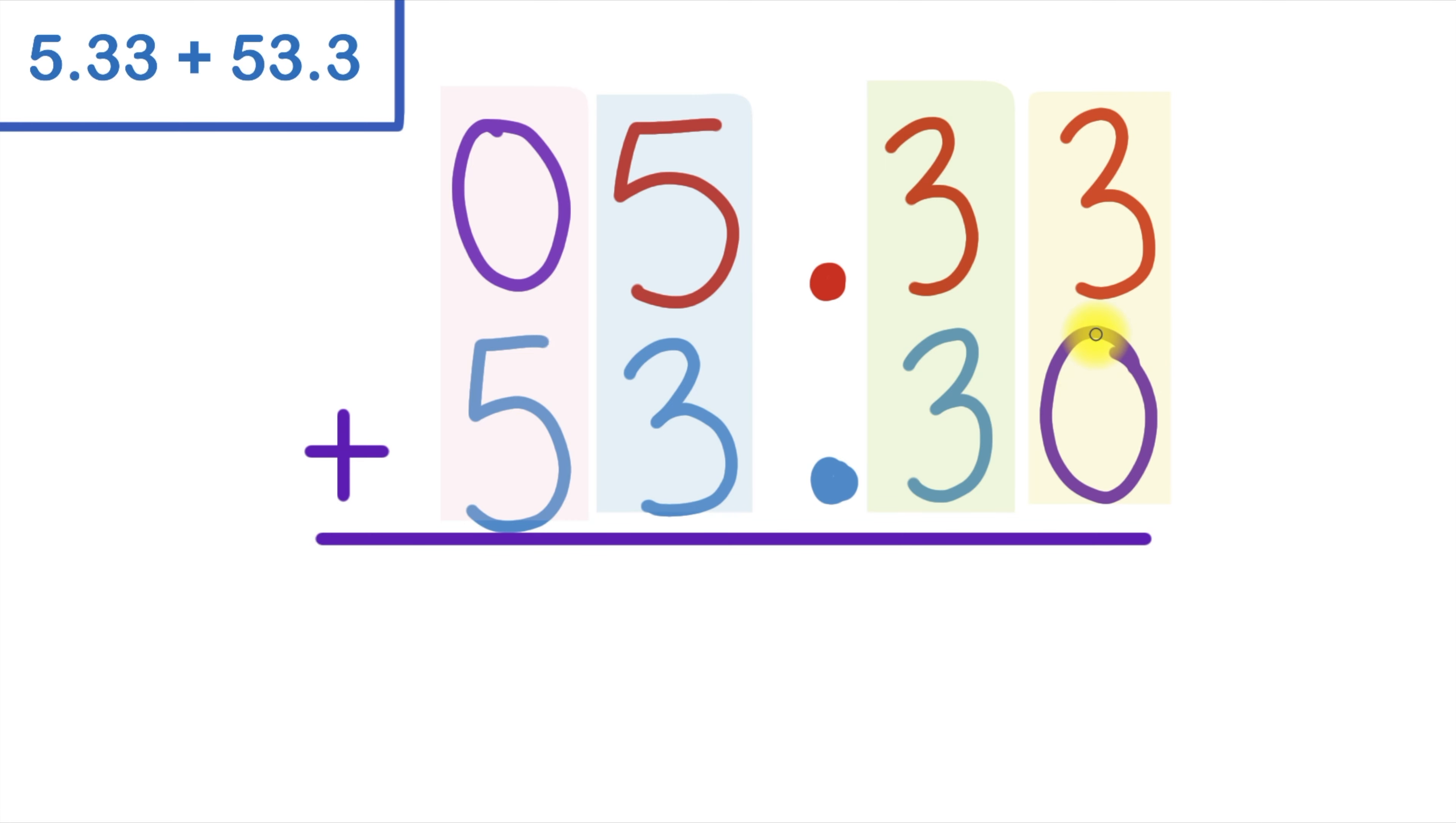Let's start from the right. Three plus zero is three. Three plus three is six. Here I'll bring down my decimal point. Five plus three is eight, and zero plus five is five.